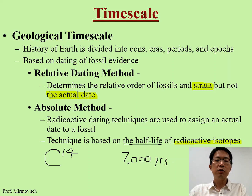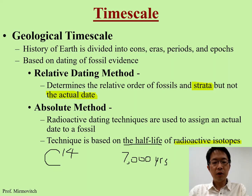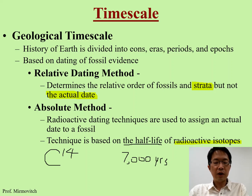Using carbon-14 dating, you can narrow down the age of the fossil in terms of 7,000 years, which is a lot more accurate. That's why I call it the absolute method — much more accurate than using the sediment layer or stratum where you find the fossil, which forms over several million years. Carbon-14 dating narrows it down to within 7,000 years.